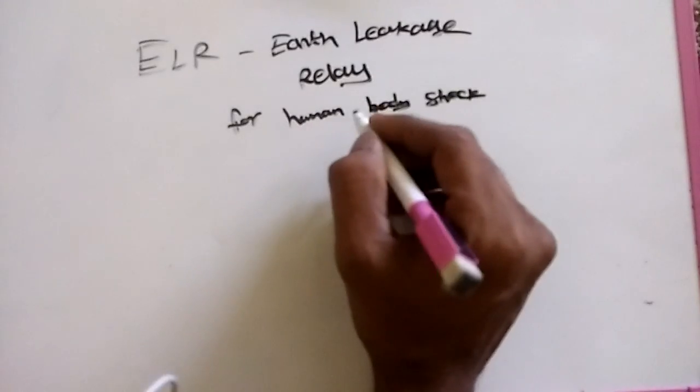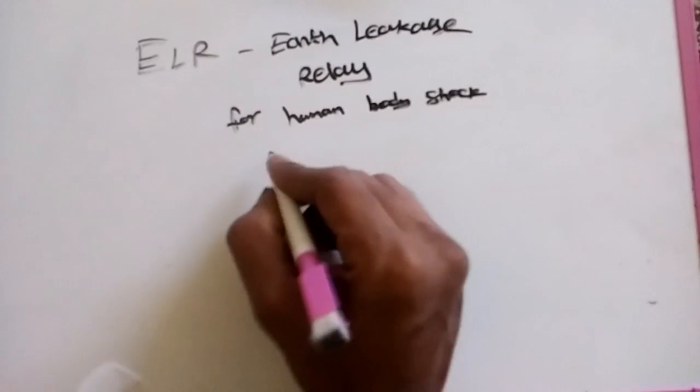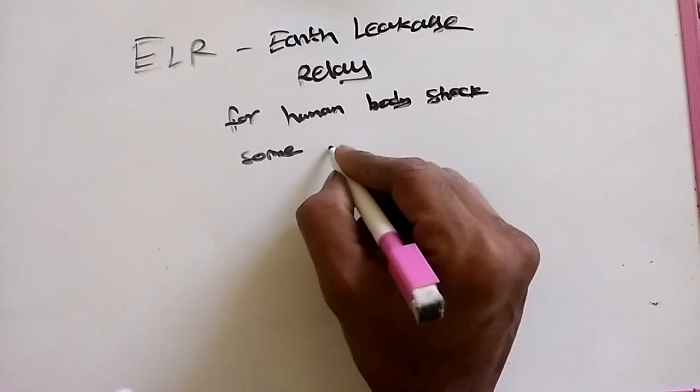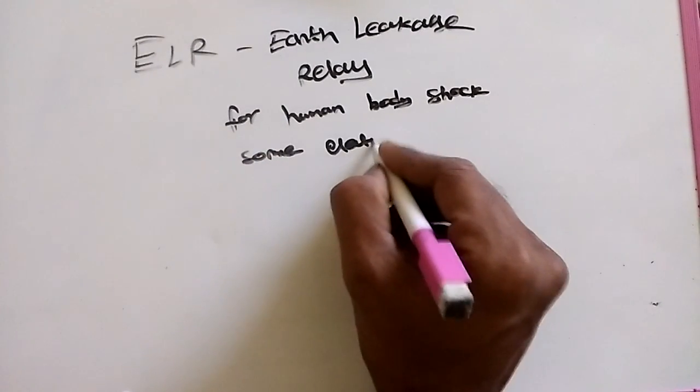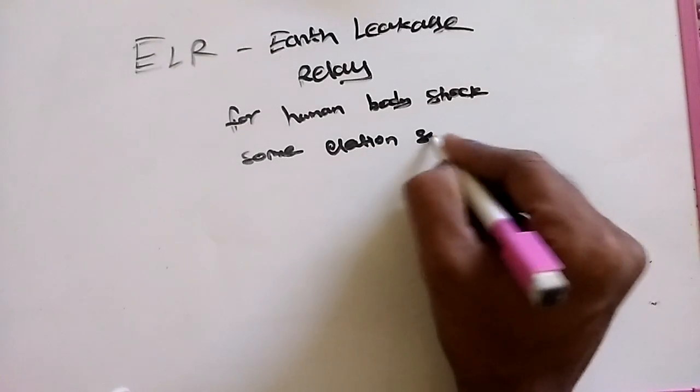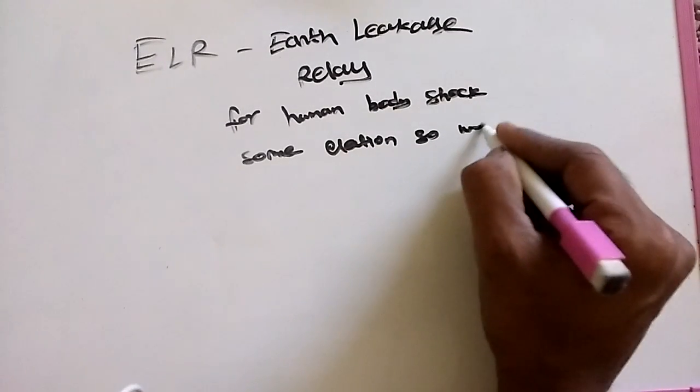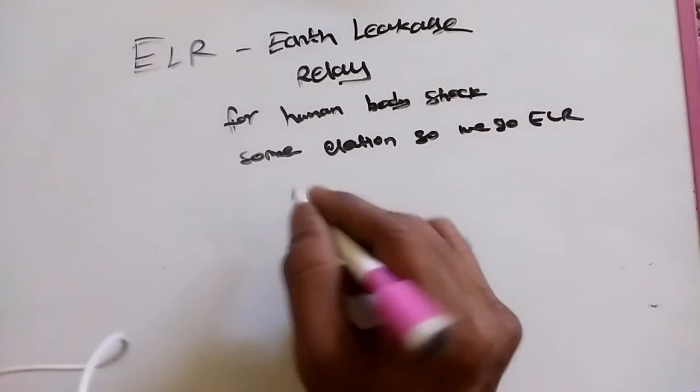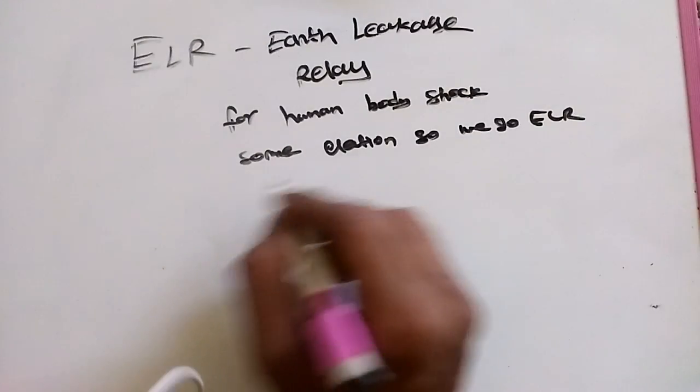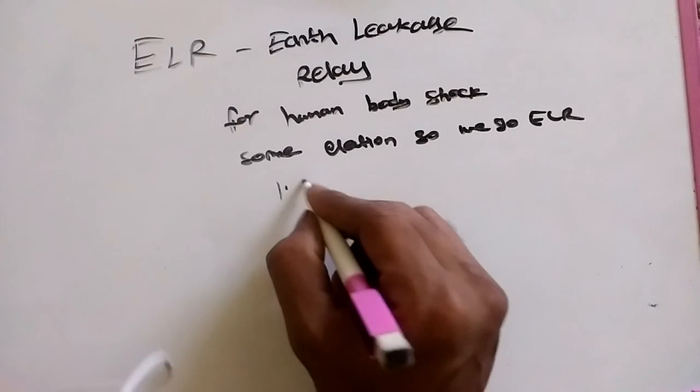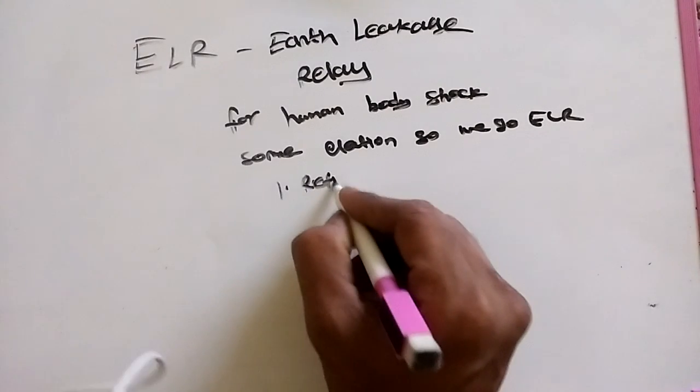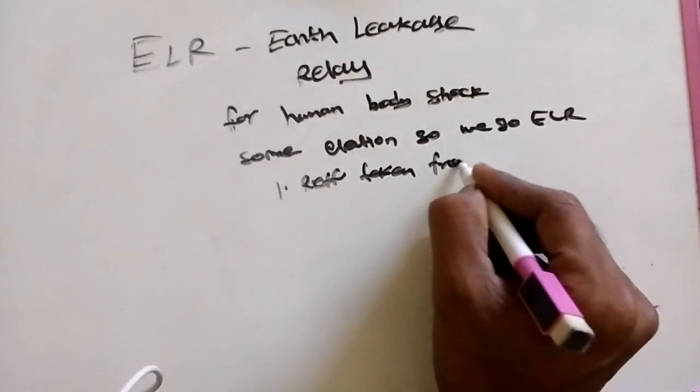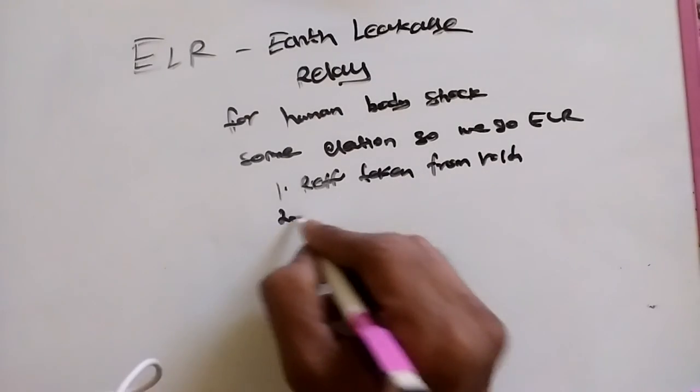This is a very important thing we need to maintain for some special cases of electrical protection. We're going to see ELR because ELR has two separate types: one is reference taken from voltage, second one is reference taken from current.